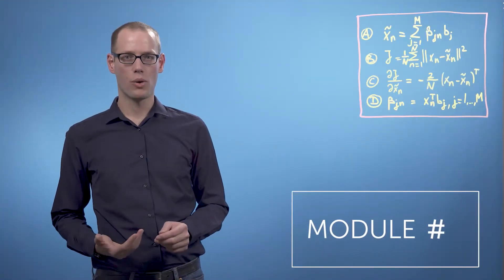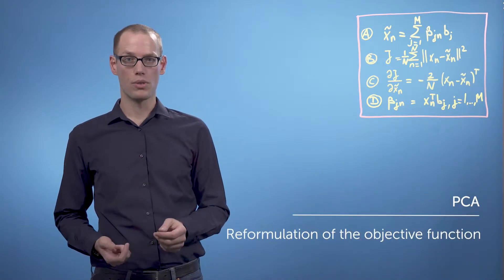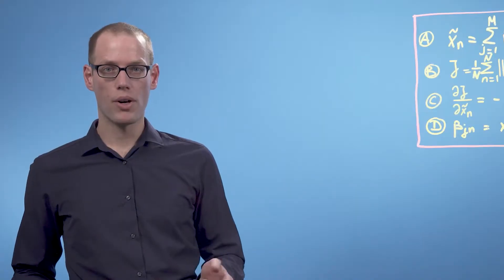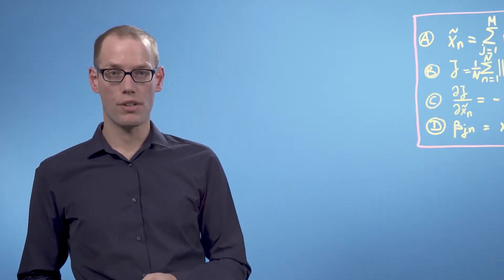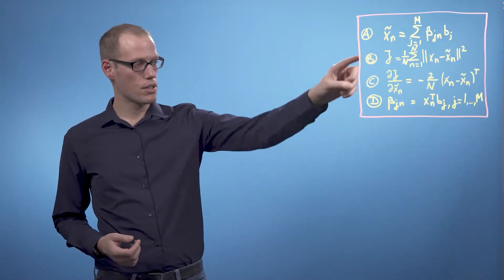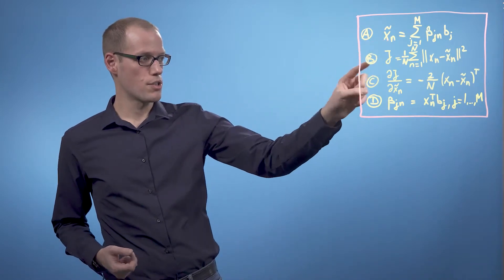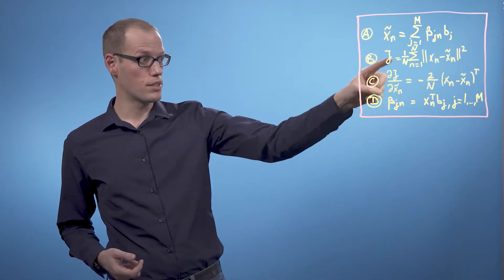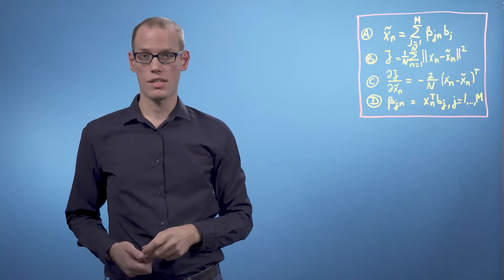In the last video we determined the coordinates of the optimal projection with respect to the orthonormal basis that spans our principal subspace. I have copied over the results that we have so far: the description of our projected data point, our loss function, the partial derivative of our loss function with respect to our projected data point, and the optimal coordinates that we found in the last video.